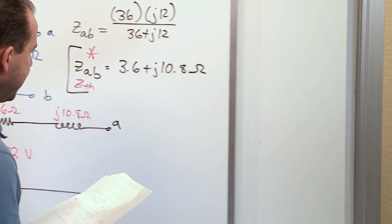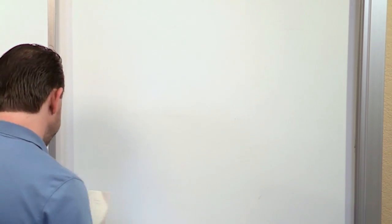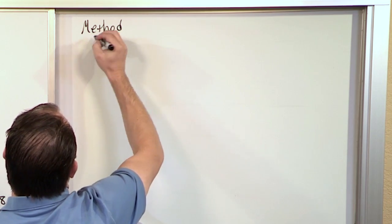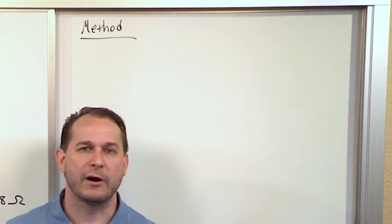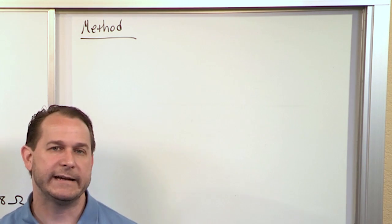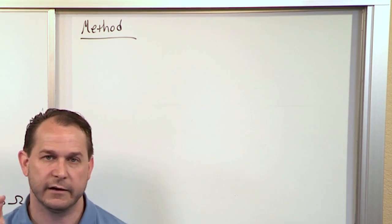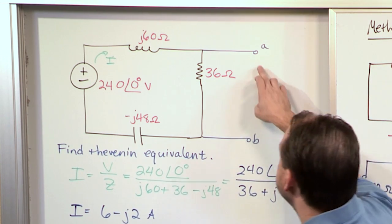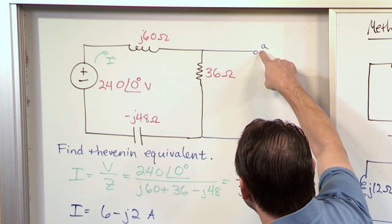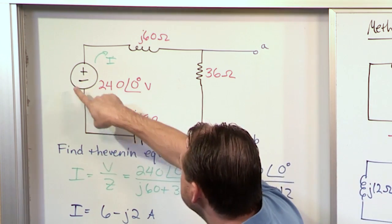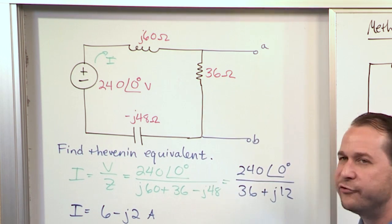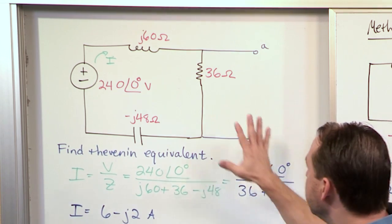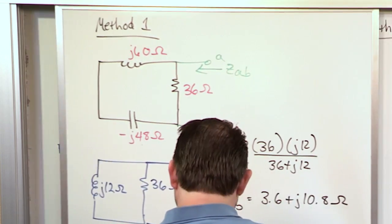Now I want to calculate the Thevenin impedance using a second method to give you practice. For method two, I'm going to short circuit terminals A and B — literally connect a wire from A to B — and there will be a current flowing through that wire. I need to find out what that short circuit current is. Once I know the short circuit current I can use Ohm's law to find the Thevenin impedance.